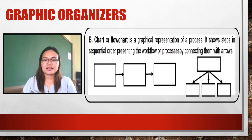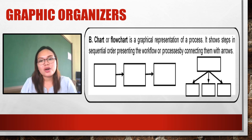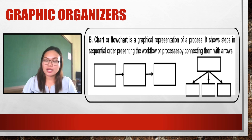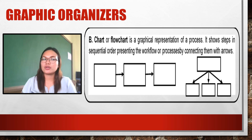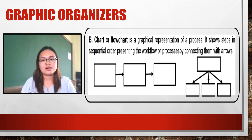Next is a chart or flowchart — a graphical representation of a process. It shows steps in sequential order, presenting the workflow or process by connecting them with arrows. We use a chart or flowchart when showing a process, steps, a sequence, or a workflow. The arrows convey that there is a beginning, a next step, and a last part of the flowchart.